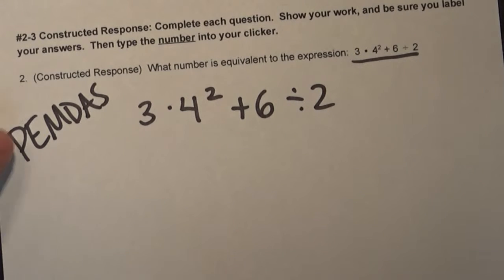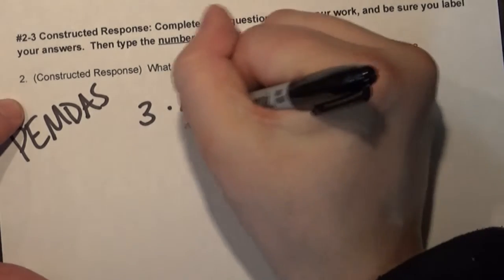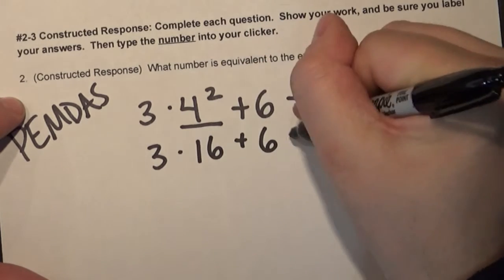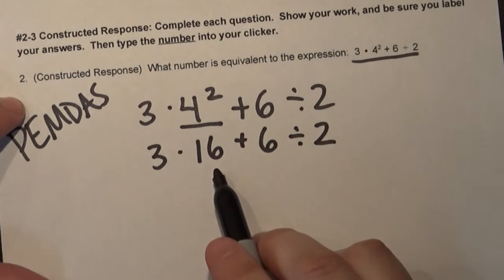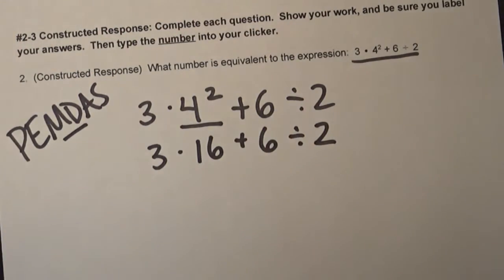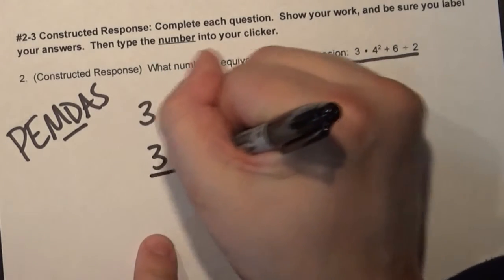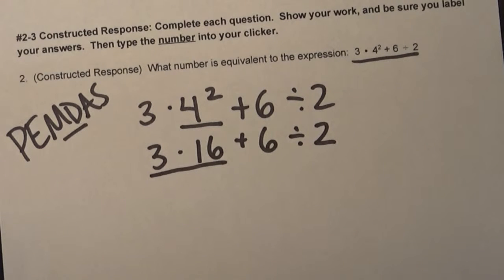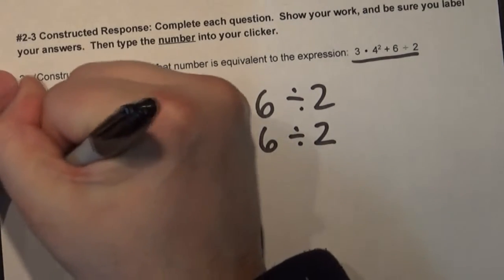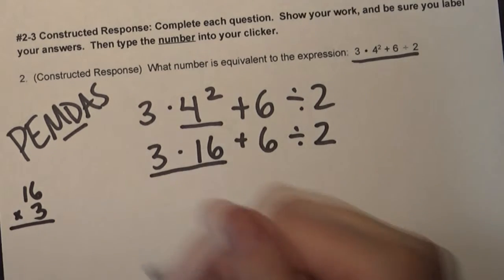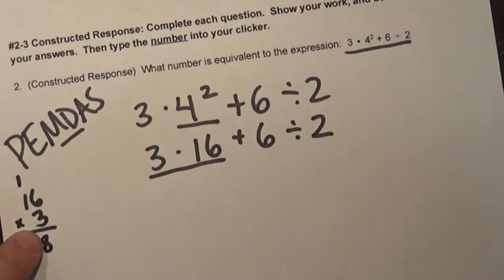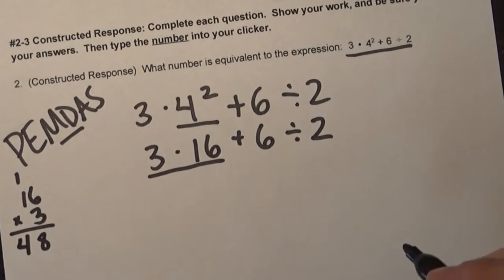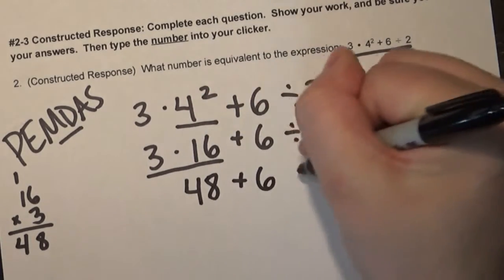Do I have any parentheses? Nope. Do I have any exponents? Yep — four squared. Remember, four squared means four times four, so four times four equals 16. I'm going to rewrite this whole thing out, but now I have 16 there. Continuing with PEMDAS, I multiply and divide in the same step working from left to right. I have three times 16 — that's multiplication and it's from left to right. So 16 times three: six times three gives me 18, three times one gives me three plus one is four. So 16 times three is 48. I can take this and make that 48 plus six divided by two.